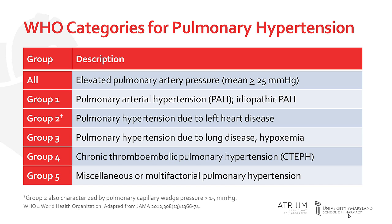First, group 1 patients are those with pulmonary arterial hypertension, or PAH, which will be the focus of this video. Group 2 is the largest category and represents those who have pulmonary hypertension as a result of left heart disease and the increase in pulmonary pressure that often results from volume overload. Group 3 are those with pulmonary hypertension due to chronic lung diseases, such as chronic obstructive pulmonary disease, or COPD. And group 4 represents those with chronic thromboembolic pulmonary hypertension, or CTEPH. Group 5 is a category that represents miscellaneous etiologies, or those where a single cause is difficult to determine.